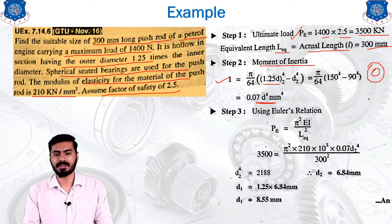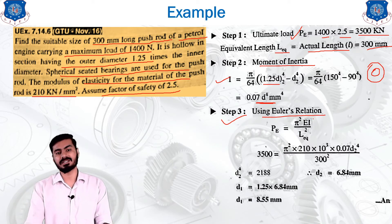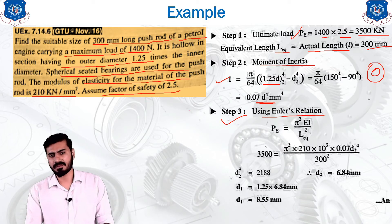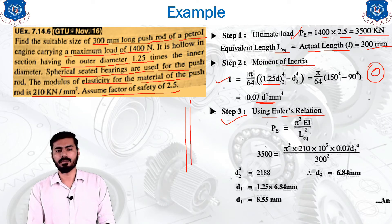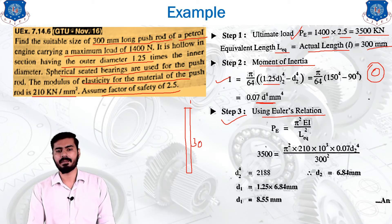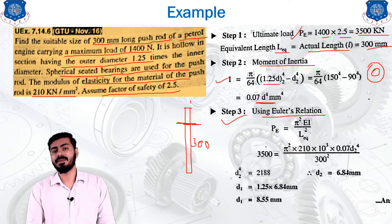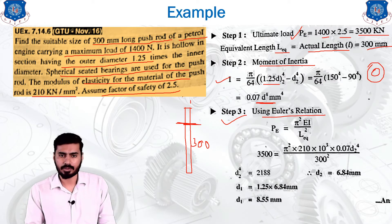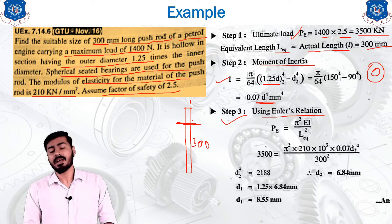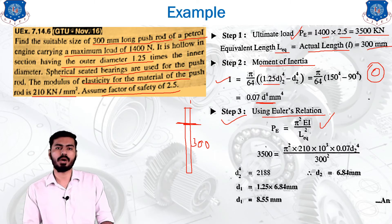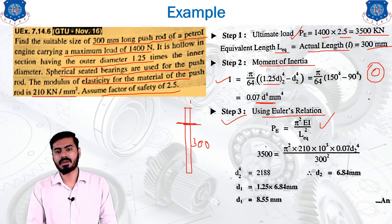In step number 3, we use Euler's equation. Why are we using Euler's equation? Because we consider the push rod as a long column. The length of the push rod is 300 mm, but the length is larger than the cross-section dimensions, so we can consider the push rod as a long column. When the push rod is a long column, Euler's formula holds good for this type of design.